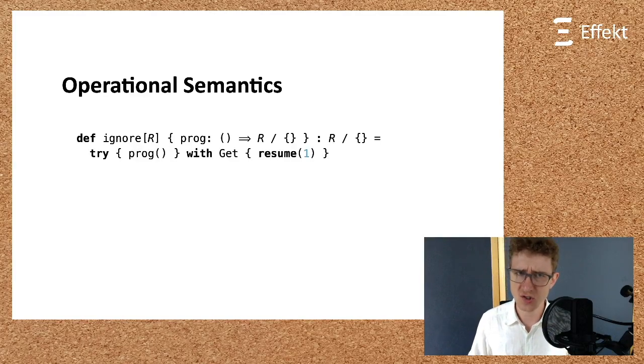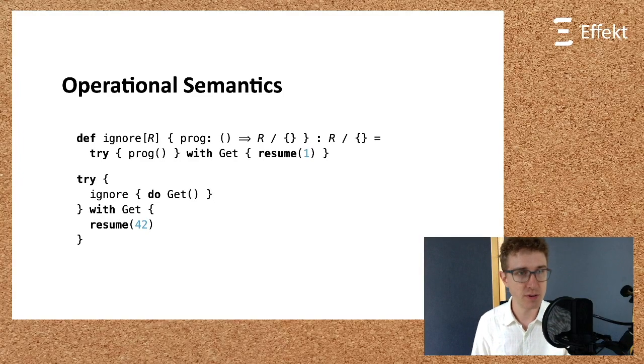Viewers familiar with exceptions in Java or effects in Multicore OCaml or Camel might be surprised to see that our examples have the desired operational semantics. In particular, this example yields 42, even though dynamically the ignore handler installs a handler for get that would resume with 1. Our operational semantics is designed in concert with the static semantics, such that it truthfully follows what the types promise. The type of ignore promises that it cannot observe, that is, handle effects of prog. To obtain the correct operational semantics, we again follow the idea of lexical scoping and translate effect programs to capability-passing style.